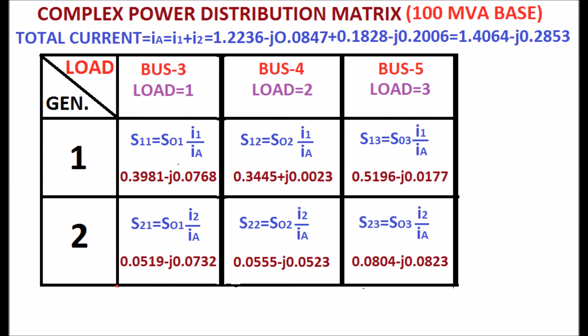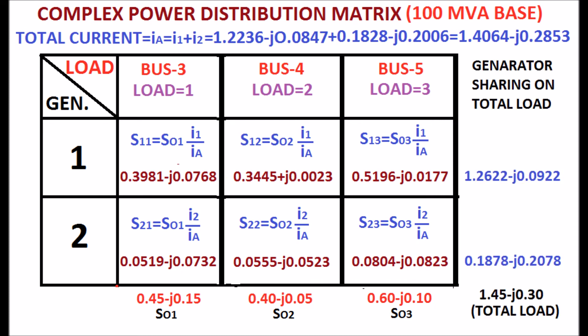All are displayed. Adding columns in the complex power distribution matrix gives the load at each bus as shown in the display. Adding row elements gives the sharing of each generator in the total system load as shown in the display.